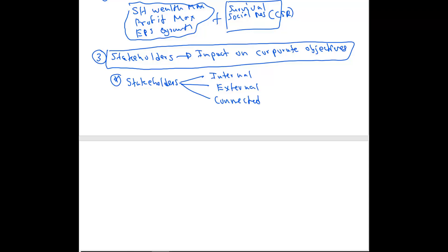Examples of connected stakeholders include shareholders, debt providers, financial institutes, customers, and suppliers. Next, you should know the different types of stakeholders and their objectives. Different stakeholders will have different objectives. For example, shareholders' objectives can be getting dividends and maximization of shareholder wealth through capital gain.